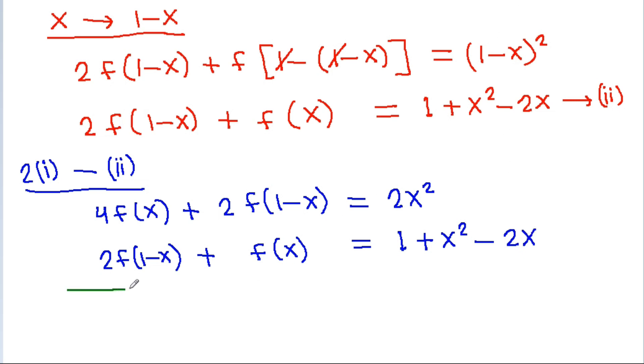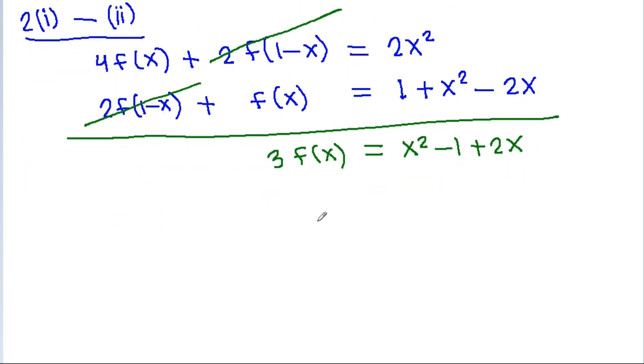And if we subtract both equations, then 2f(1-x) will get cancelled. So 3f(x) = 2x² - x² - 1 + 2x, which equals x² - 1 + 2x.